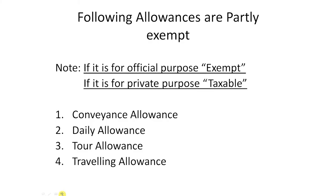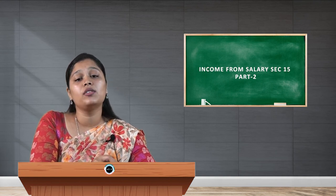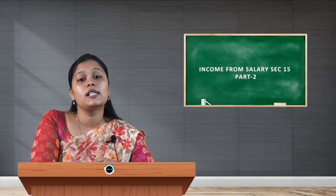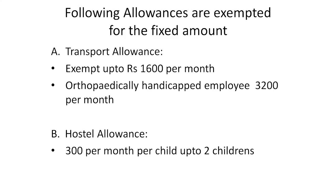The following allowances are exempted for a fixed amount. First one: transport allowance. Transport allowances are those allowances which are provided to the employees in order to meet transportation expenses between the place of residence and the place of duty. It is exempt up to Rs. 1,600 per month for normal employees. For orthopedically handicapped employees, exemption limit is up to Rs. 3,200 per month. Next one: hostel allowance. Hostel allowances are provided to meet children's hostel expenses, with exemption up to Rs. 300 per month per child, up to two children.